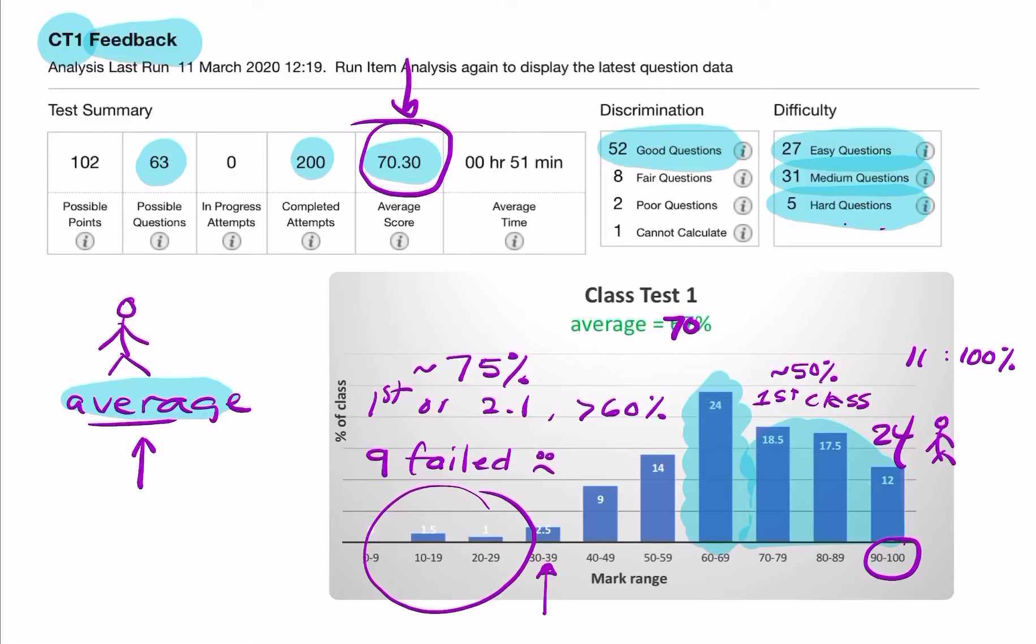For an open book class test, I would expect your average to be slightly higher than what you would get in an unseen, closed final exam. But we wouldn't expect the average to be much higher than 70%. So I'm quite happy with this distribution of marks. I hope on reflection, when you look at the proportion of easy and medium questions to the hard questions, when you look at how many good questions there are, I hope you will appreciate that this class test was in fact a fair and appropriate assessment of your abilities.